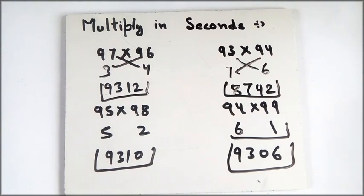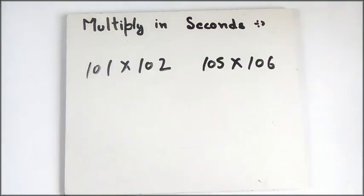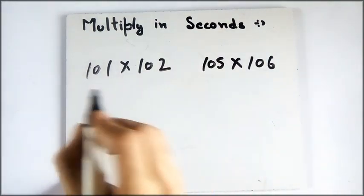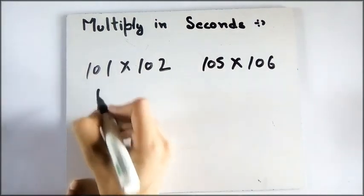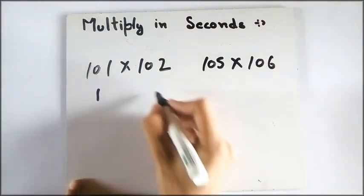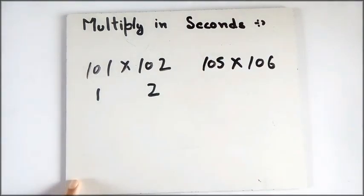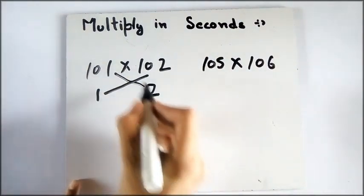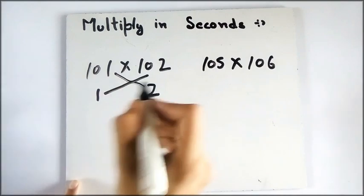This is how fast we can calculate. Now let's take a look at those numbers which are greater than 100. Take a look at these numbers — you have to do the same thing, but here you have to see how much the number is greater than 100. Instead of subtracting, you add that to the number.